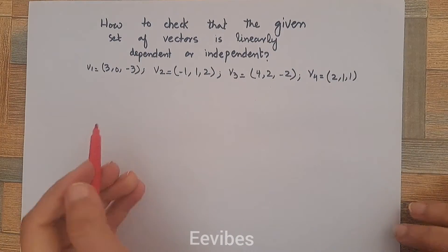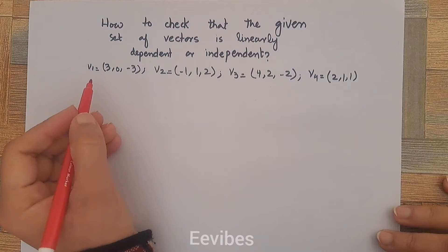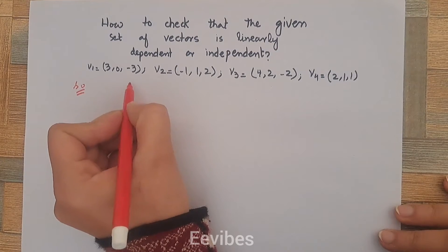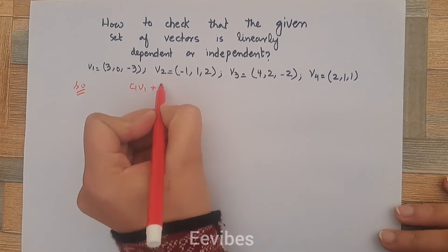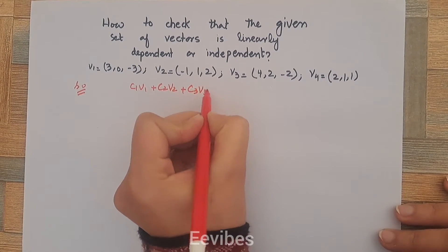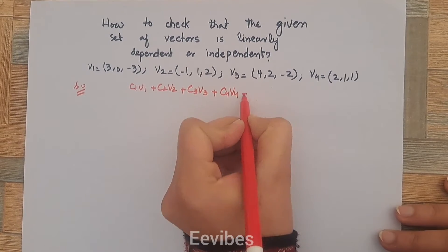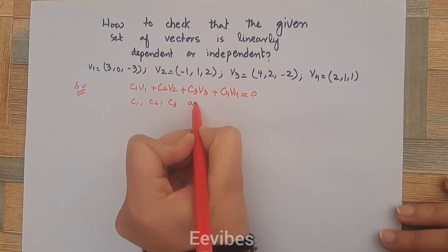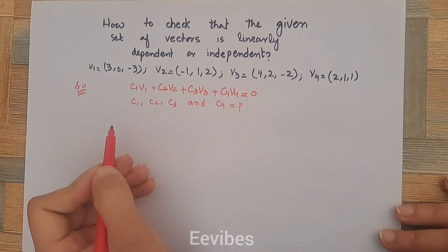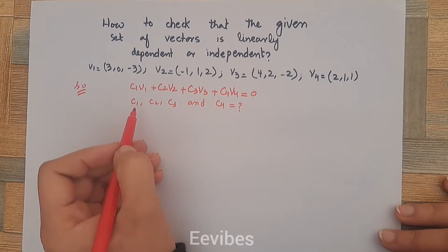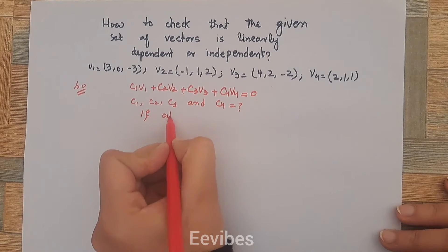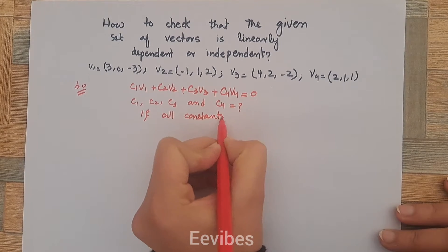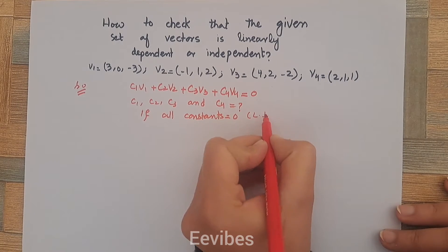This is Asma Mushtaq, and in this tutorial we will check how a given set of vectors is actually linearly dependent or independent. For that, we need to write the linear combination equation: c1*v1 + c2*v2 + c3*v3 + c4*v4 = 0, where the constants c1, c2, c3, and c4 are unknown. If all these constants are equal to 0, then the vectors will be linearly independent.